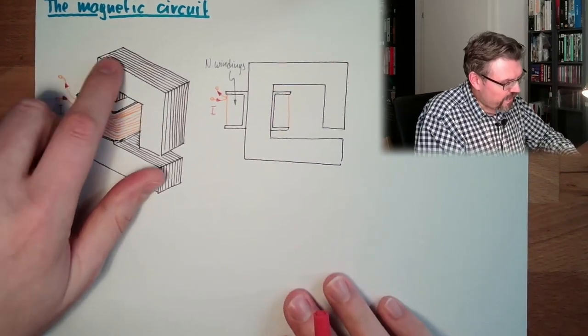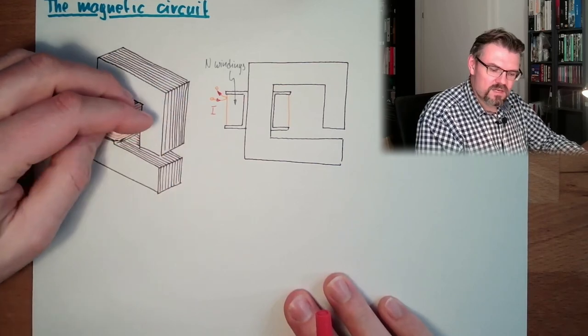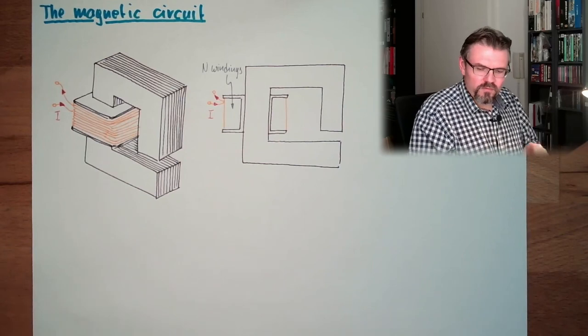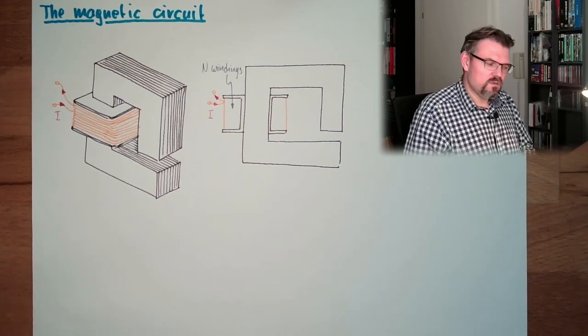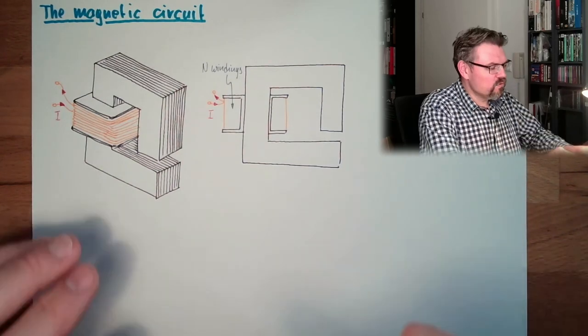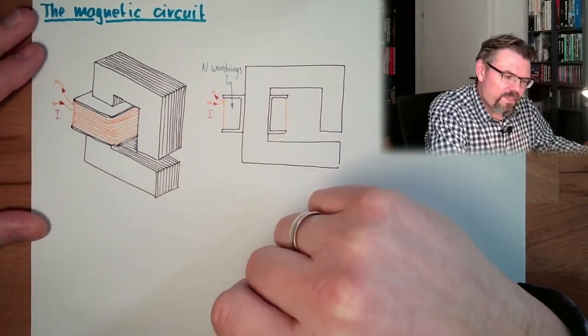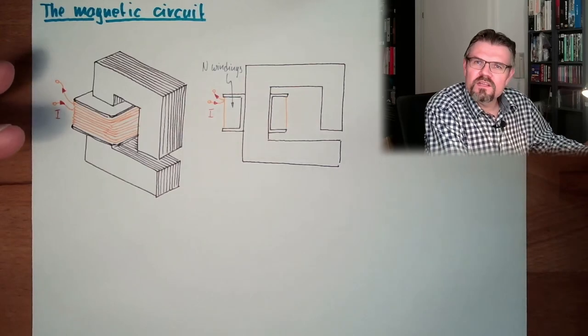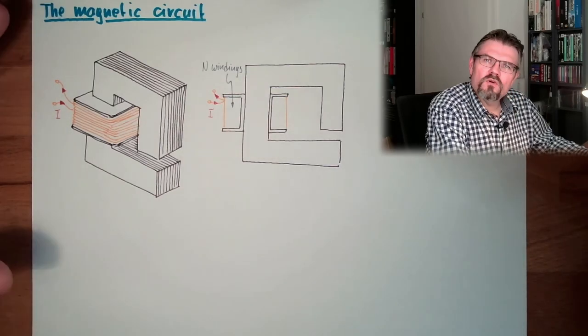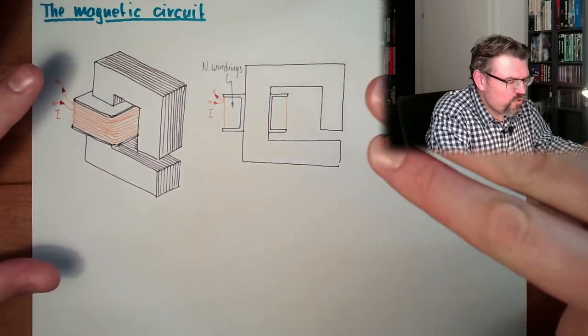Why I have drawn this like it would be staples? Because actually, this is how those things are built. They are built with sheet metals. Sheet after sheet after sheet is stacked. This has a reason. Those sheets are also electrically isolated to each other because we want to prevent so-called eddy currents.